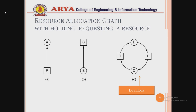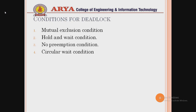In diagram C, if we have a circular arrangement, we can say it is a deadlock. For example, process C is requesting resource T, whereas T is already being held by another resource U. In this circular manner, the condition is identified as deadlock.